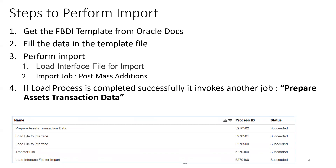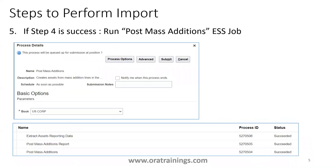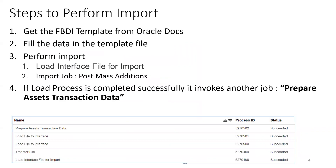Once it runs successfully, it will invoke another job called Prepare Asset Transaction Data. If there is no failure in any of these processes, you can go to the next step where we have to run the Post Mass Addition job, and there you have to select the book for which you want to add the asset. When you prepare the data, there is a column called asset book — you have to mention that particular asset book. Now before proceeding further, we'll get into the instance and try to understand some of the information.